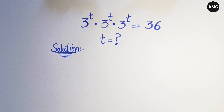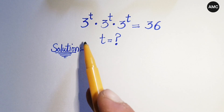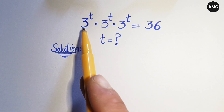Hello everyone, welcome back to Image Club. Today we have a nice exponential problem: 3 to the power t times 3 to the power t times 3 to the power t is equal to 36. We have to find the value of t here.